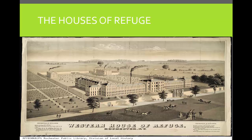After reformation, boys were frequently indentured to masters on farms or to tradesmen, and girls were placed in domestic service. When houses of refuge were not successful, reformers introduced the practice of placing out — placing children on farms in the Midwest and the West to remove them from the supposedly corrupting influences of their parents and of the larger cities. This was done often without the parents' permission or even without their knowledge.